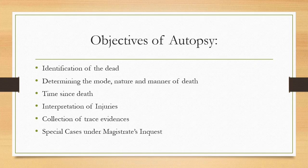Fifth is collection of trace evidence. Especially when the dead body is associated with some further crime, we can collect trace evidences like hair, nail clippings, soil particles present on the clothes, glass fragments, and paint chippings. All of this can be collected and used as further evidence.